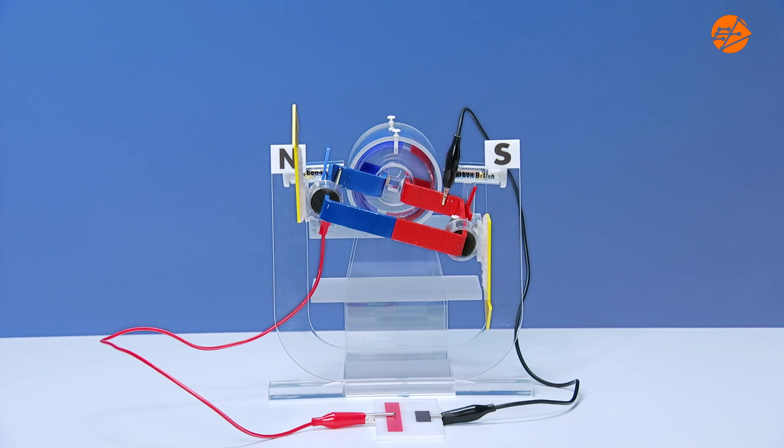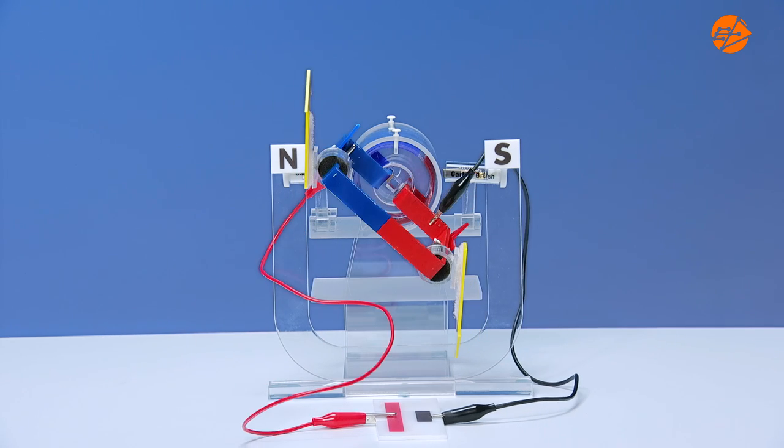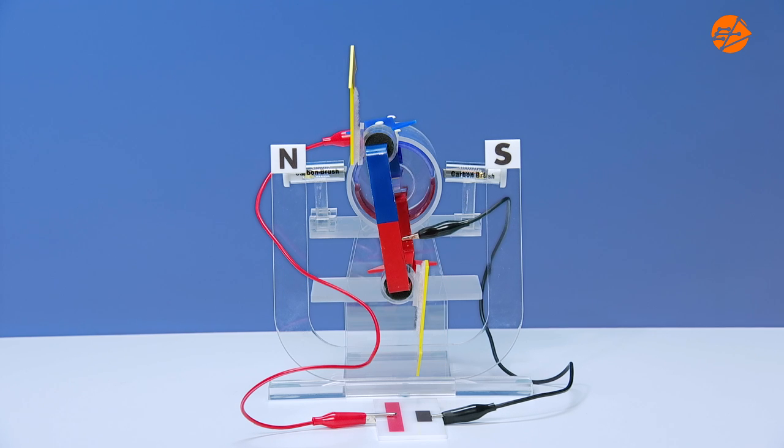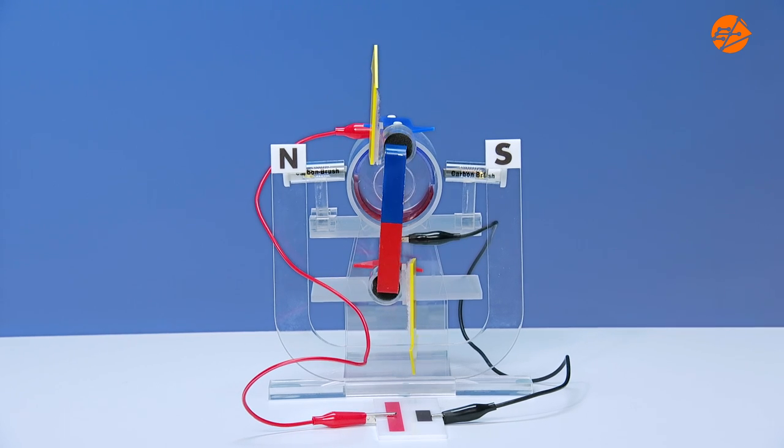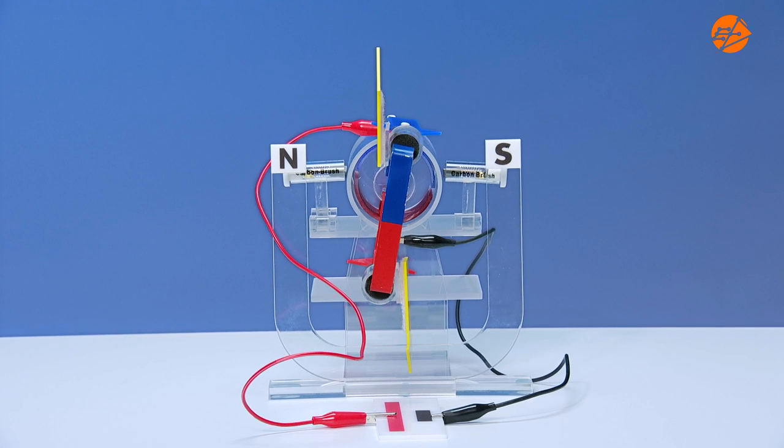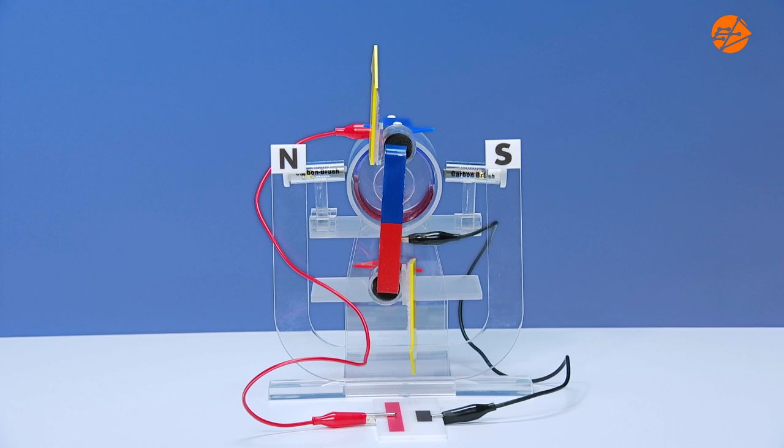At the coil's vertical position, the directions of the magnetic forces are acting vertically upwards and vertically downwards. As both equal forces act in opposite directions, no turning effect is created. As a result, the coil stopped spinning.